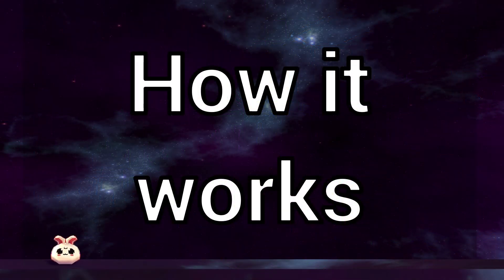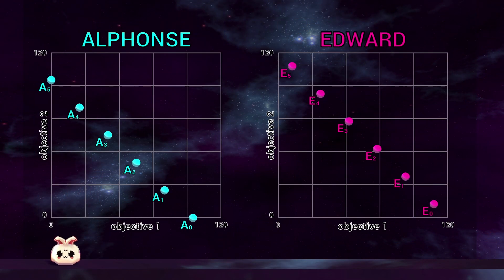Here we have solution sets from two made-up algorithms named Alphonse and Edward. A quick reminder that we're doing minimization, so smaller objective values are better. So the closer the solutions are to the bottom left of our plots, the better they are.